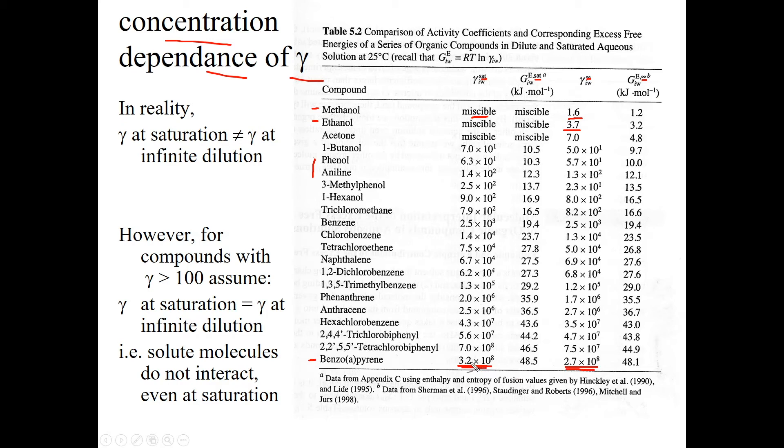The other thing you notice is that there is a slight difference between the activity coefficient at saturation and the activity coefficient at infinite dilution. Sometimes it's not huge, this is only a difference of 0.5, which is 10, 15%. But there are some scenarios where the difference is bigger. For 2,2,5,5 tetrachlorobiphenyl, the activity coefficients differ by about an order of magnitude, depending on whether you're at saturated or dilute solution.